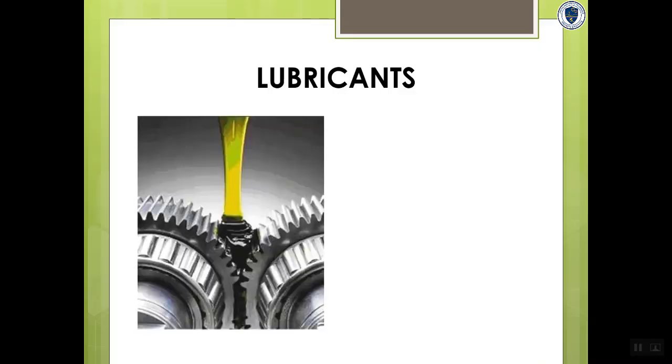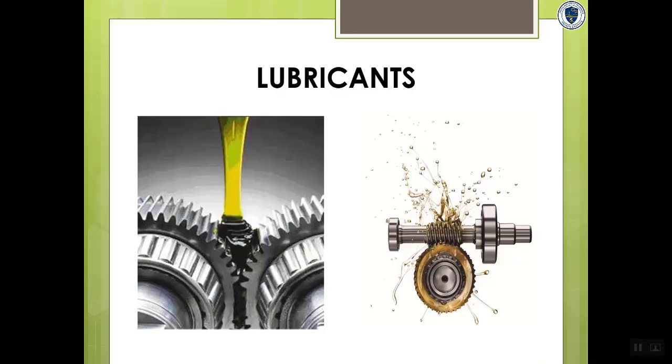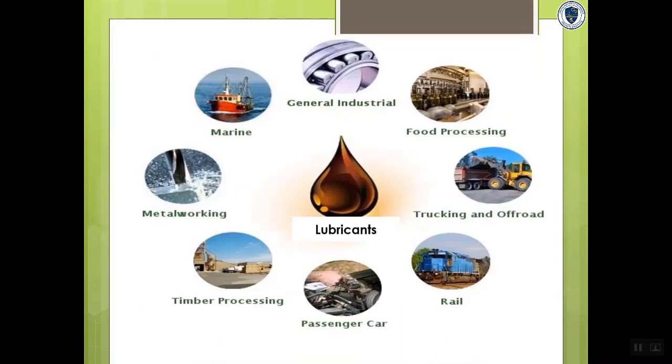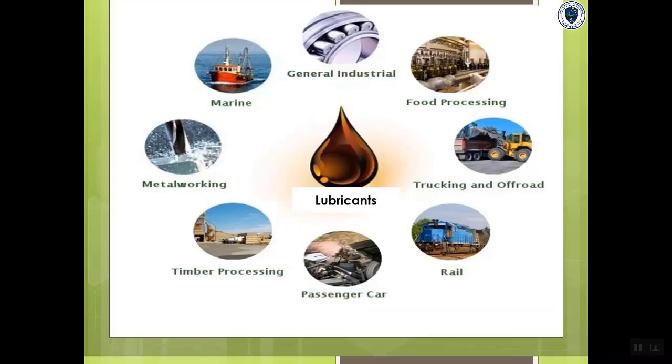Lubricants are the substances used in industries to reduce friction and also the frictional heat. Lubricants like oil, grease, graphite, molybdenum disulfide are used for general industrial purpose. Lubricants are used in many industries like general industries, food processing, trucking, rail, in passenger cars, timber processing, metalworking and marine.